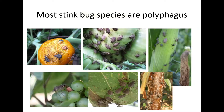Brown marmorated — as well as most other stink bug species — shares one key characteristic: they are polyphagous, meaning they feed on multiple hosts and actually prefer to move about the landscape looking for the most nutritious food.